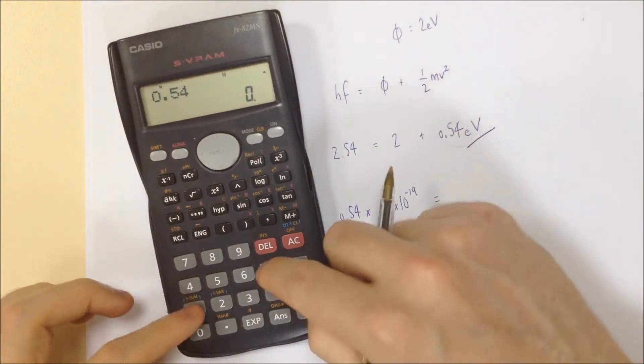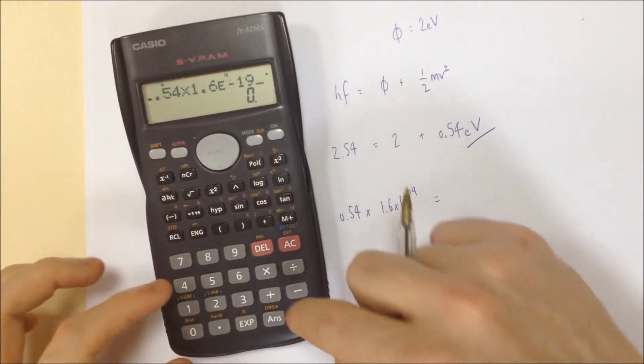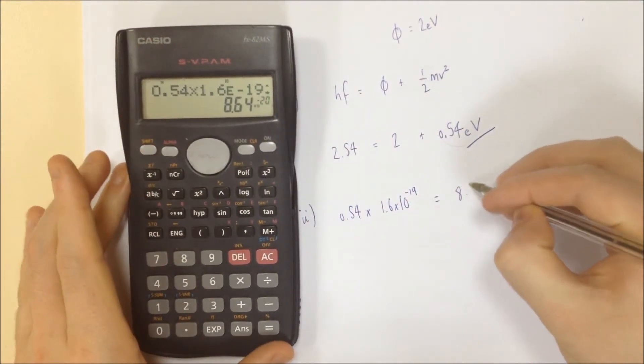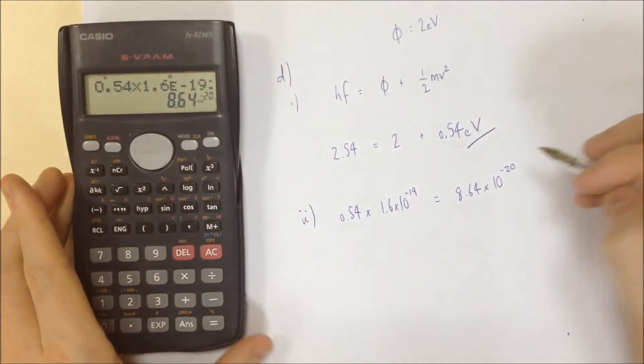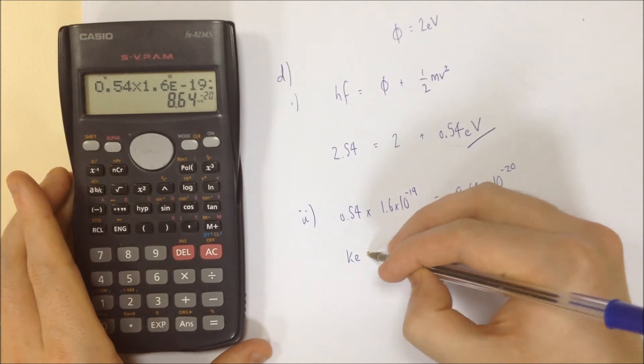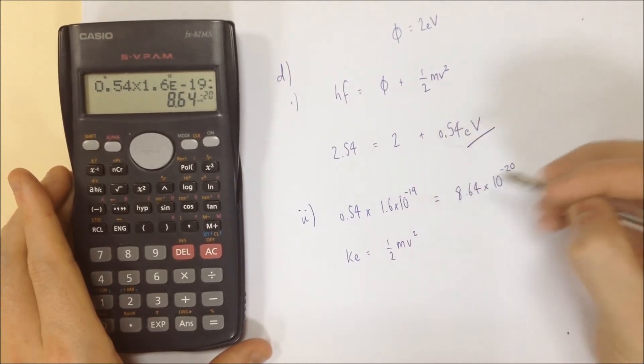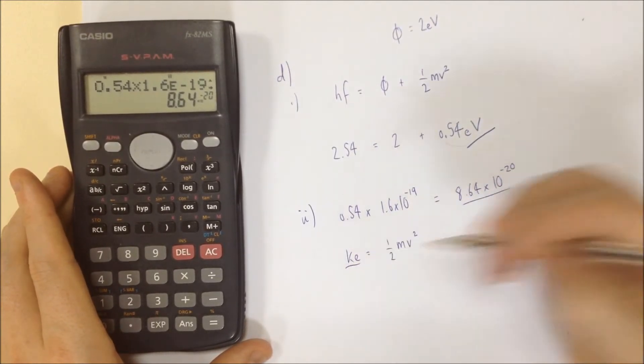the charge on the electron. So stick that in the old calculator. 1.6 to the minus 19. That gives me 8.64 times 10 to the minus 20. Okay, so that's the kinetic energy that it has, which is half mv squared.